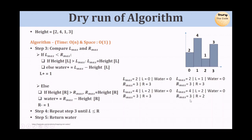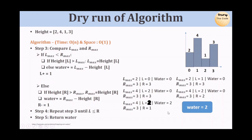Now lmax and rmax are both equal (lmax=3, rmax=3), so we fall into the else part and compute water for the R pointer. R points to the last bar with height 3, rmax=3, so water += 3-3 = 0. Shift R left. rmax=3 still, fall into else. R now points to a bar with height=0, so water += 3-0 = 3, total = 6. Shift R. Check again: lmax not smaller, else condition. R bar has height=1, rmax=3, water += 3-1 = 2, total = 8. Shift R. Now left and right point to the same bar.